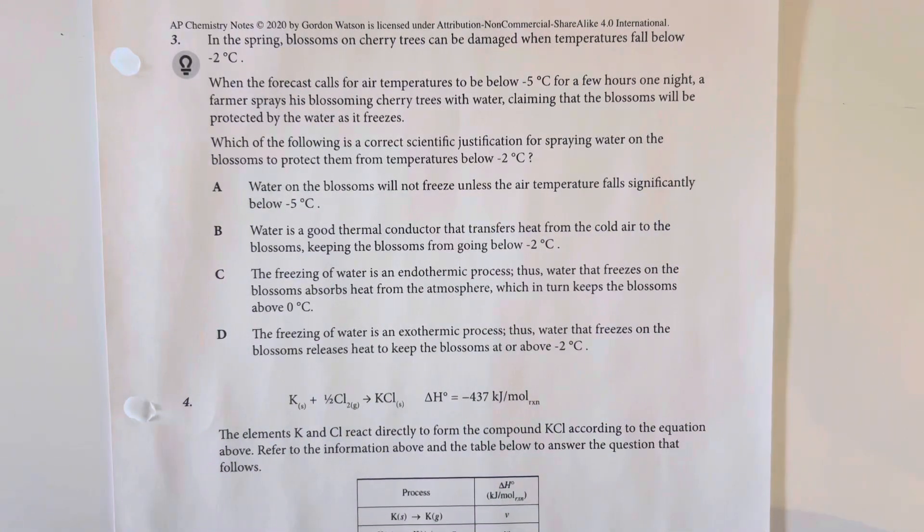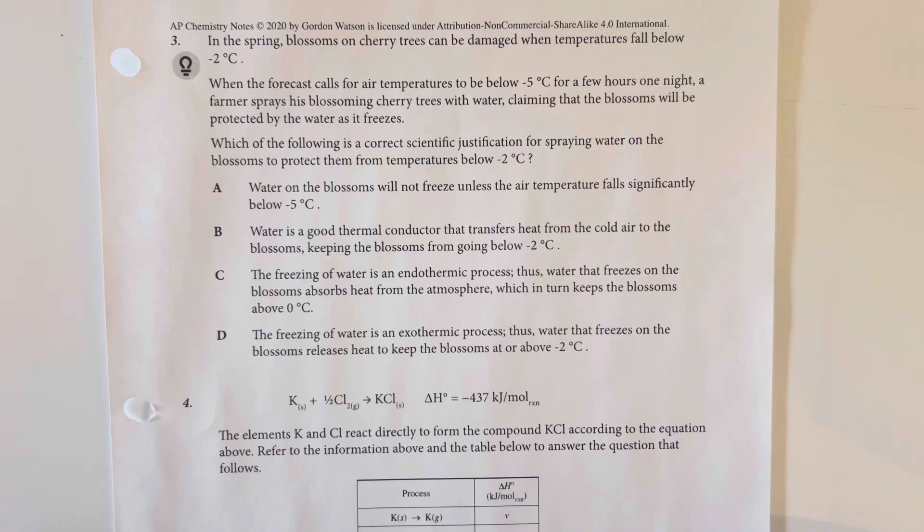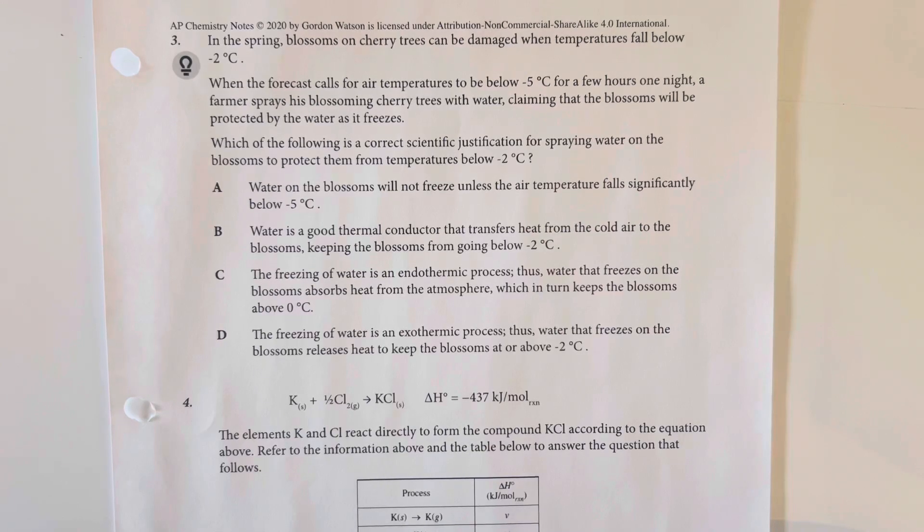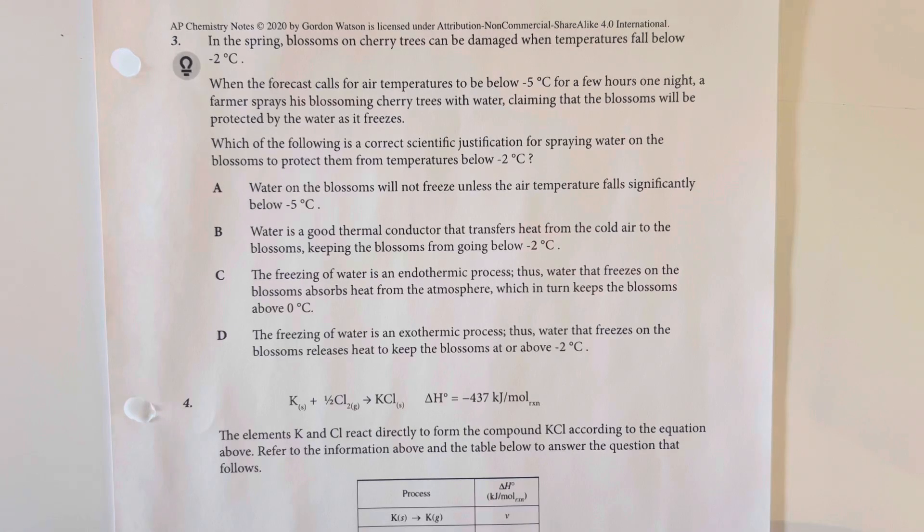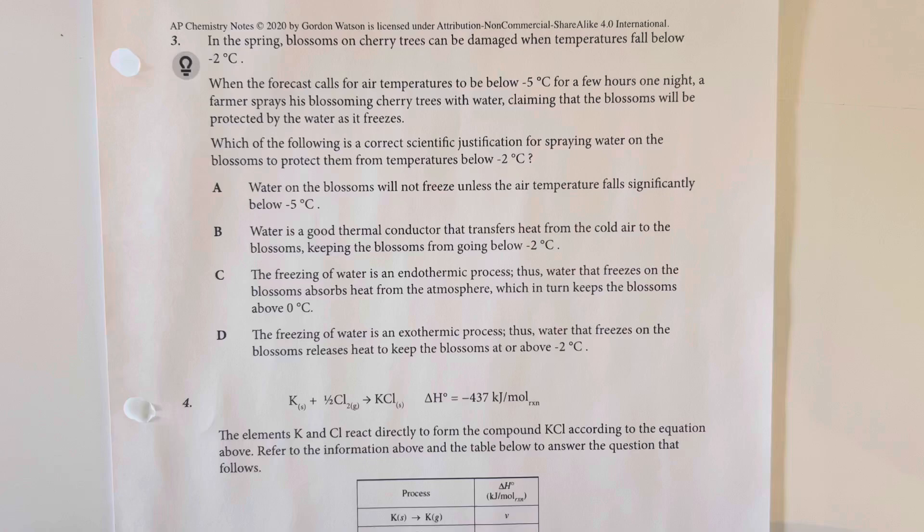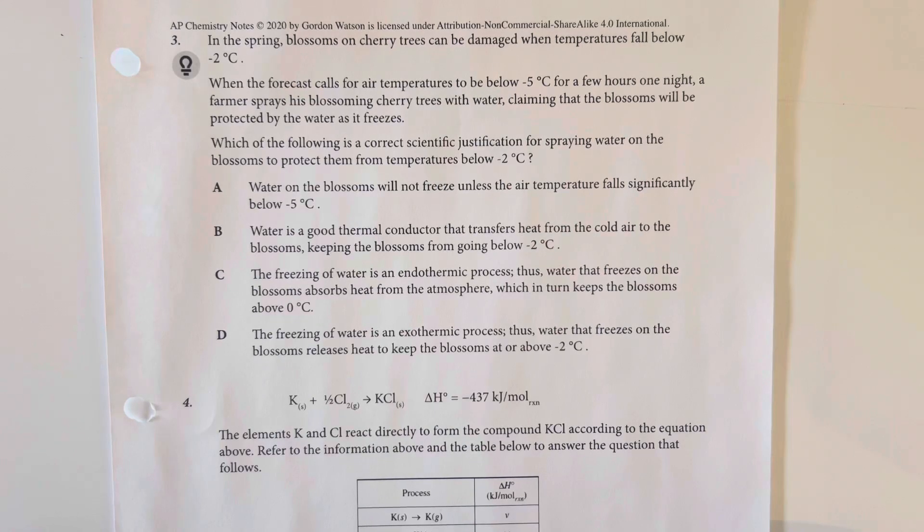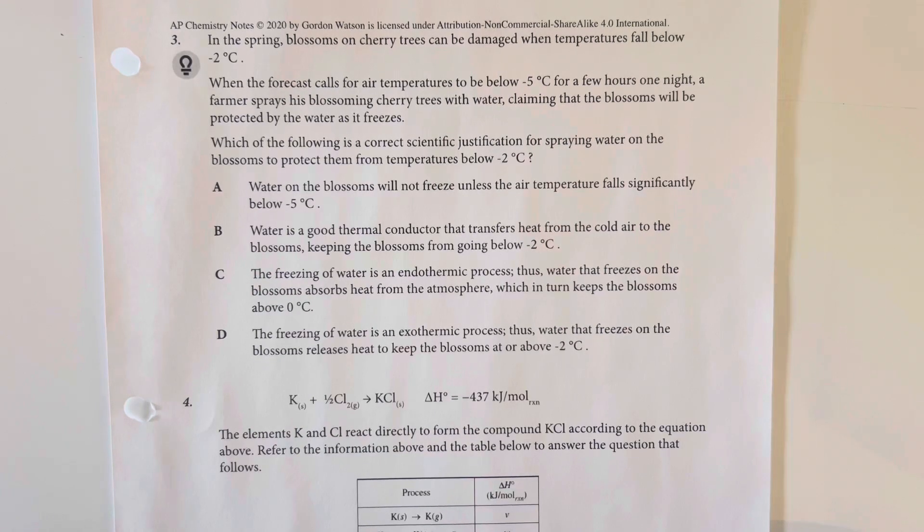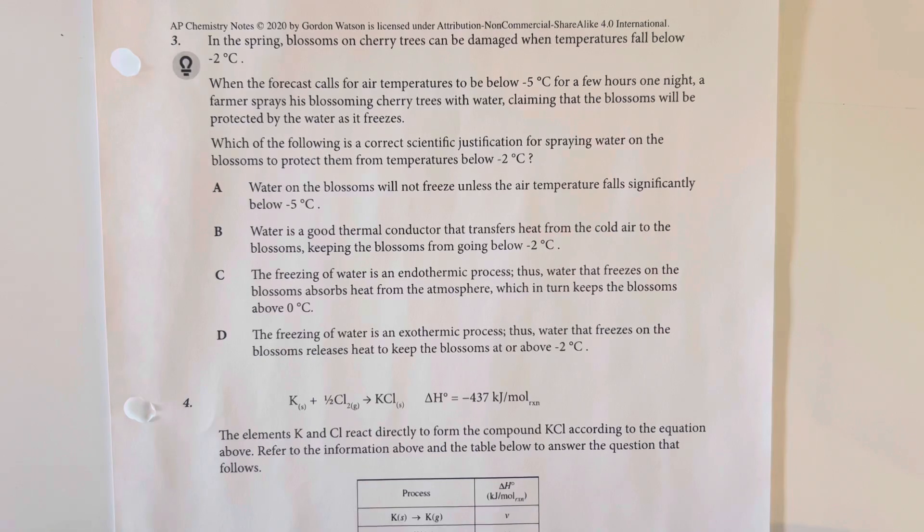In the spring, blossoms on cherry trees can be damaged when temperatures fall below negative two degrees Celsius. When the forecast calls for air temperatures to be below negative five degrees Celsius for a few hours one night, a farmer sprays his blossoming cherry trees with water, claiming that the blossoms will be protected by the water as it freezes. Which of the following is a correct scientific justification for spraying water on the blossoms to protect them from temperatures below negative two degrees Celsius?